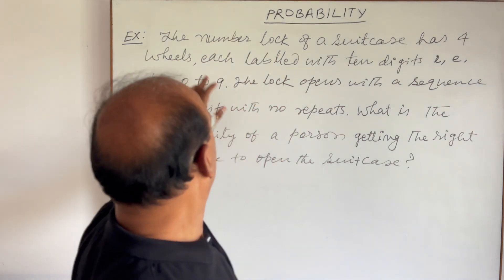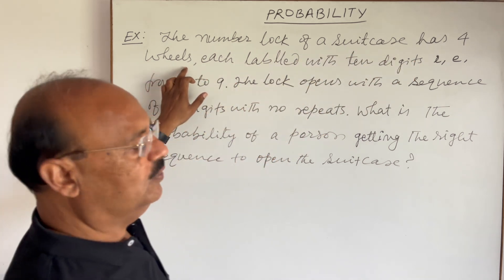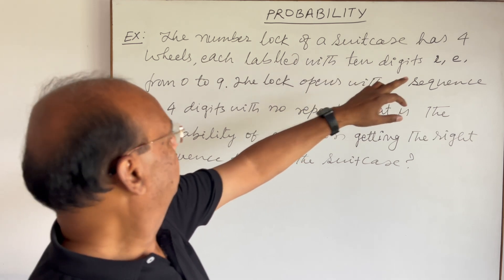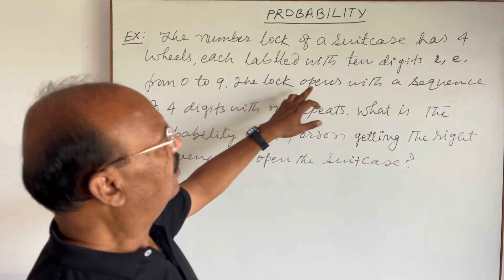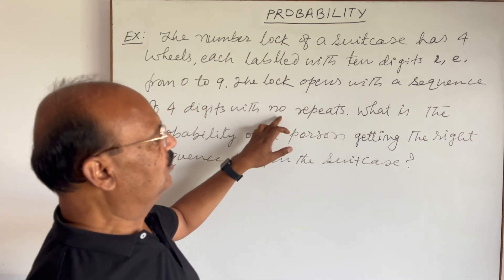Here the question is: the number lock of a suitcase has four wheels, each labeled with ten digits, that is from zero to nine. The lock opens with a sequence of four digits with no repeats.